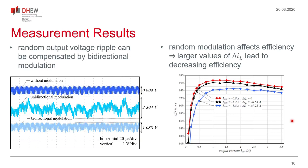Randomly modulating the converter also leads to a decrease in efficiency, as we get larger RMS currents, larger change in magnetic field in the inductor, and larger RMS currents through both switches. As shown here, without any modulation we have the highest efficiency. With bidirectional modulation, increasing the amplitude of the random signal leads to more losses and therefore decreasing efficiency. There is a trade-off between the random modulation depth and efficiency.